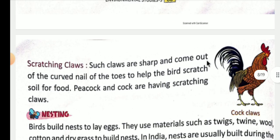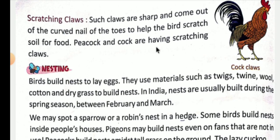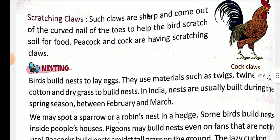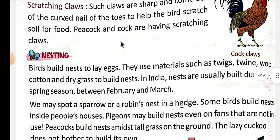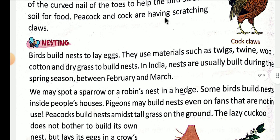Sparrow and robin ke is tarike ke pair paaye jaate hain. Scratching claws — such claws are sharp and come out of the curved nail of the toe to help the bird scratch soil for food. Is tarike ke jo claws hote hain wo sharp hote hain aur curved nail hota hai unghliyon mein jo bird ki help karte hain mitti ko khodne mein, jisse wo apna food mitti mein se nikaal sake.